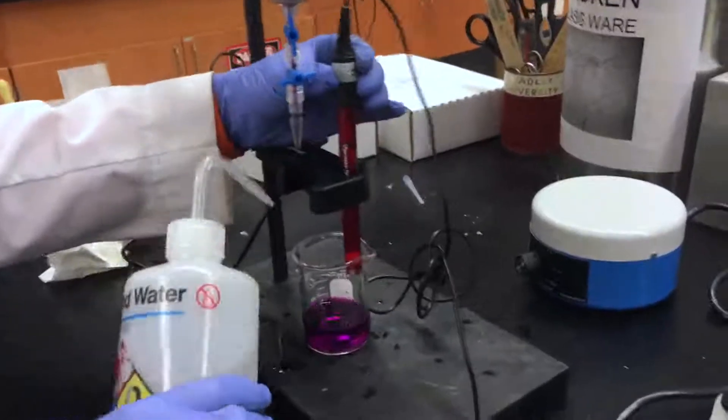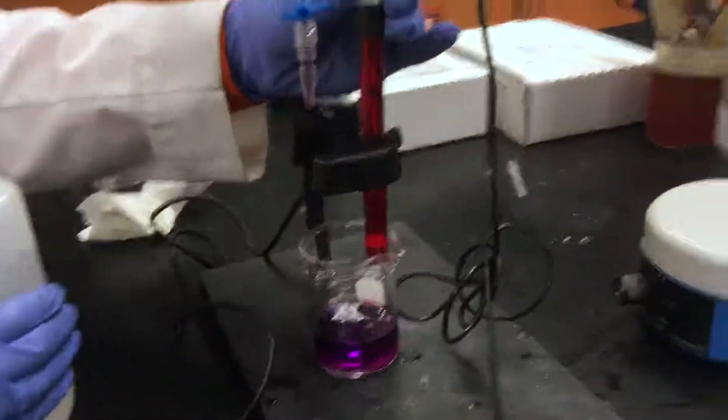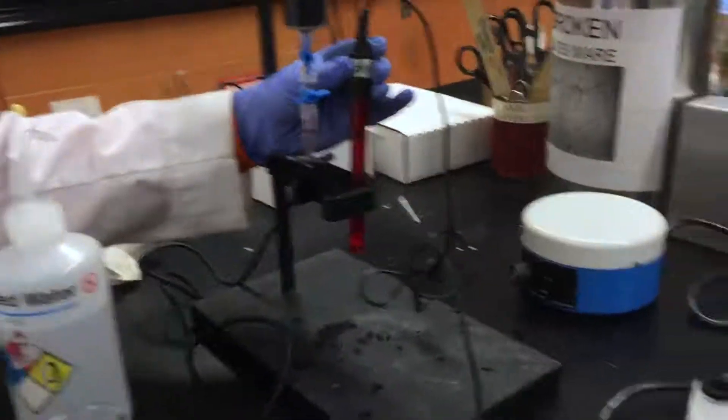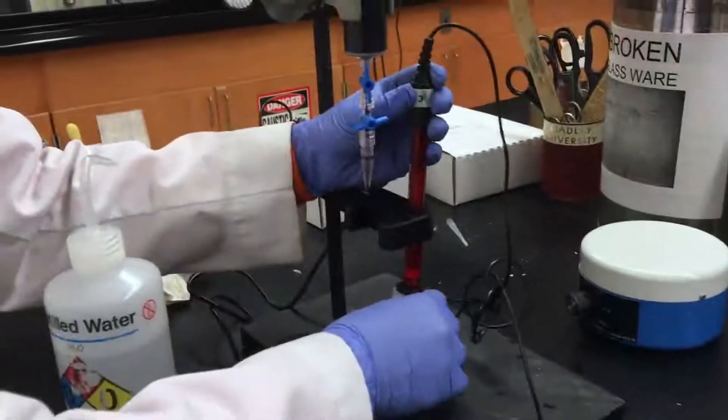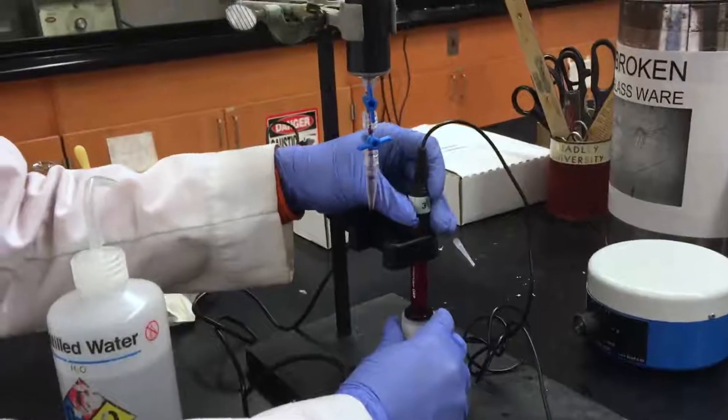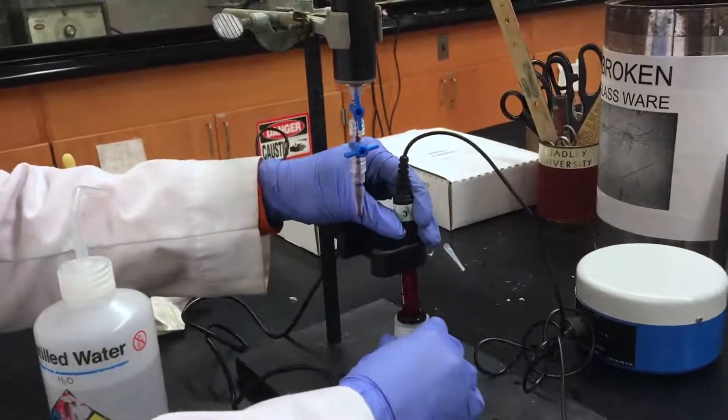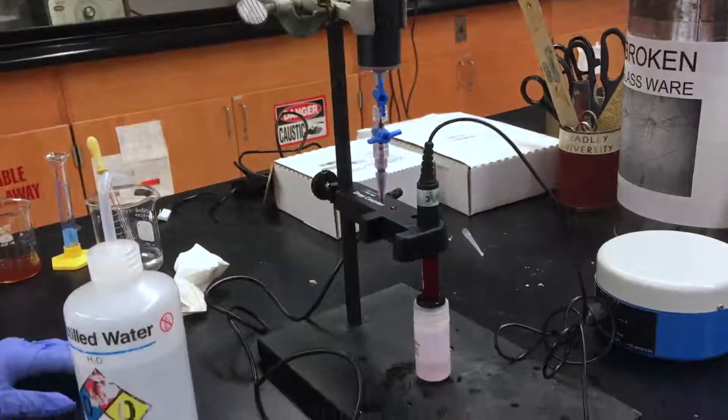So now the titration is done. Eilish is going to take the probe out again and clean it with the DI water. And then we're going to put it back into the buffer solution for storage purposes. And then you're going to discard your sample as the lab states. And clean up anything else that you need to.